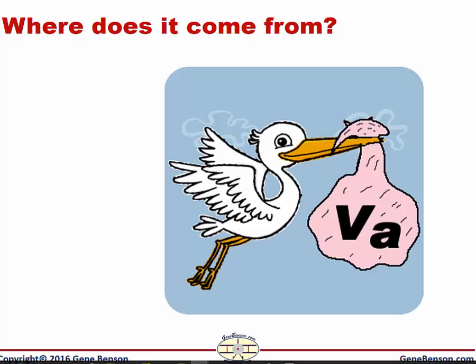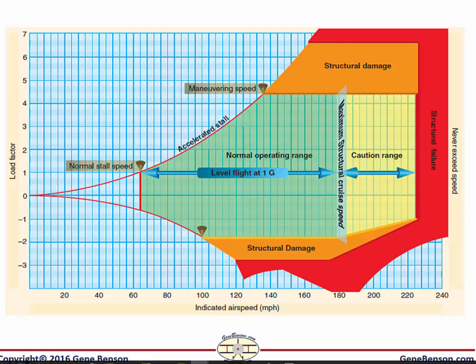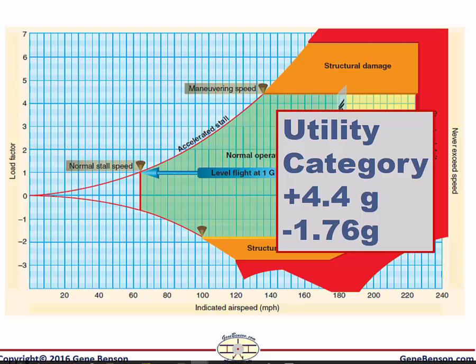Where does maneuvering speed come from anyway? Here is the V-G diagram. It is for a specific airplane — the example here is from an FAA diagram and is generic for a utility category airplane. An airplane operating in the utility category must be able to withstand a positive load factor of 4.4, also referred to as 4.4 G's, which is the limit load factor. Positive load factors are what we encounter when we feel like we are being pushed down in our seats, such as pulling out of a dive or when in a steep turn. The negative limit load factor for utility category airplanes is negative 1.76.